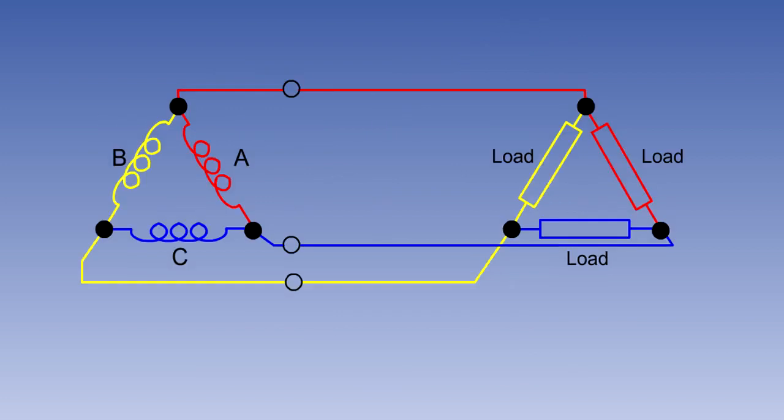In a delta-connected AC generator, the ends of the three phases are joined together to form a closed mesh. And the loads are connected in a similar fashion. Because the potential measured across the phase is measured between two lines, the line voltage and the phase voltage are the same.